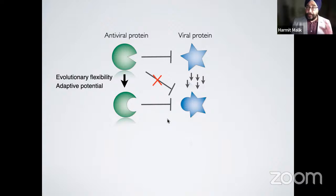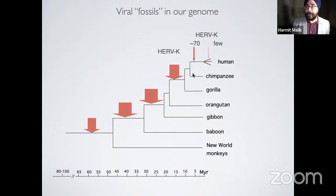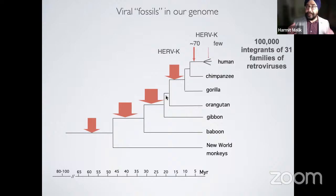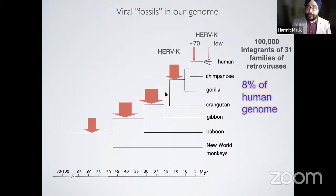Being an evolutionary biologist also tells you a lot about history. We've taken the same approach to attribute the history of viral fossils that have taken up residence in our genome — primarily retroviruses. The last episode of retrovirus invasion of the human genome is estimated to have occurred between 200,000 and 600,000 years ago. There are 100,000 different integrant versions of 31 different virus families resident in our genome. These dead viruses make up 8% of the human genome, whereas all protein-coding genes and RNA making up a human organism only account for about 5%.